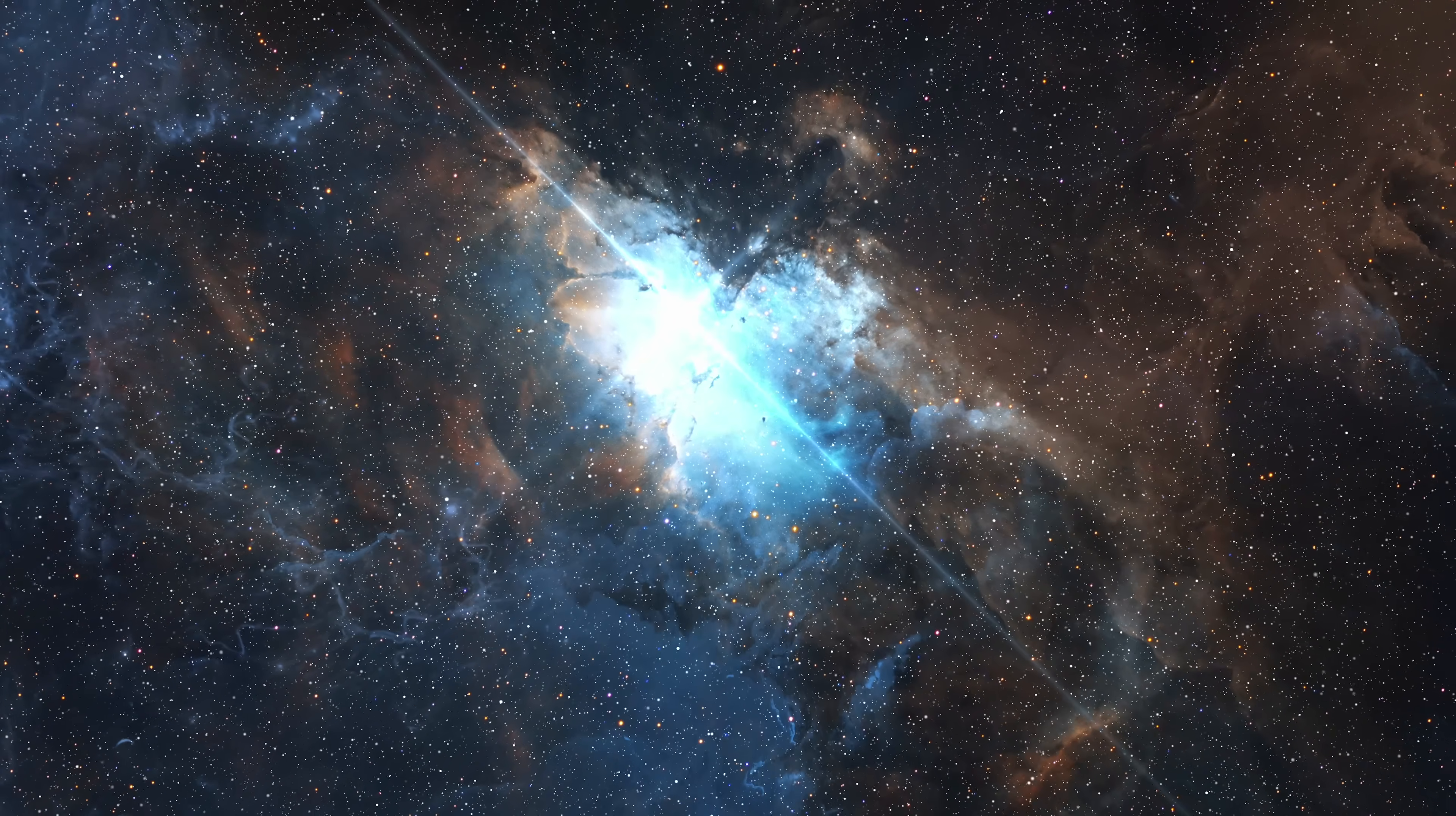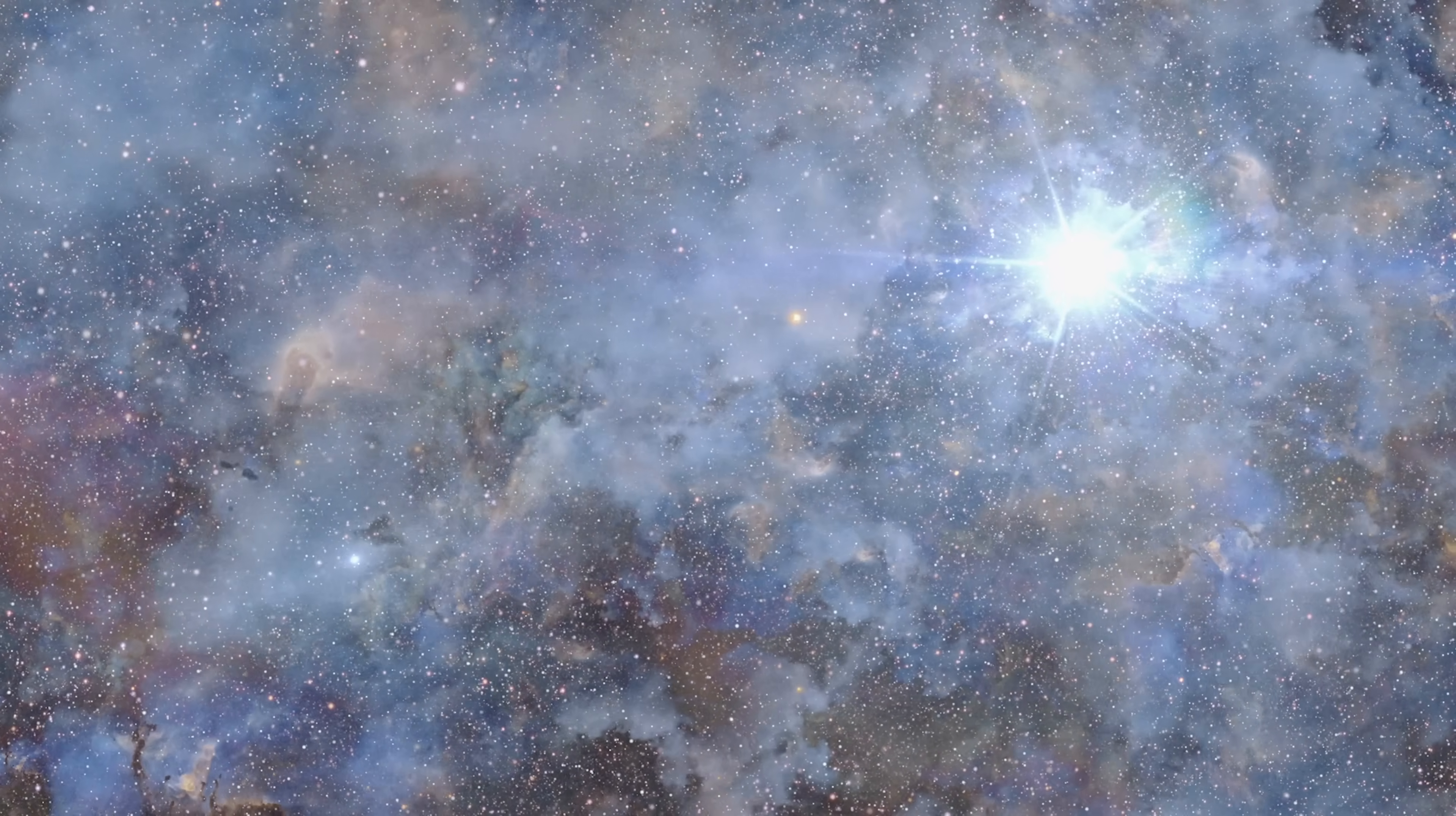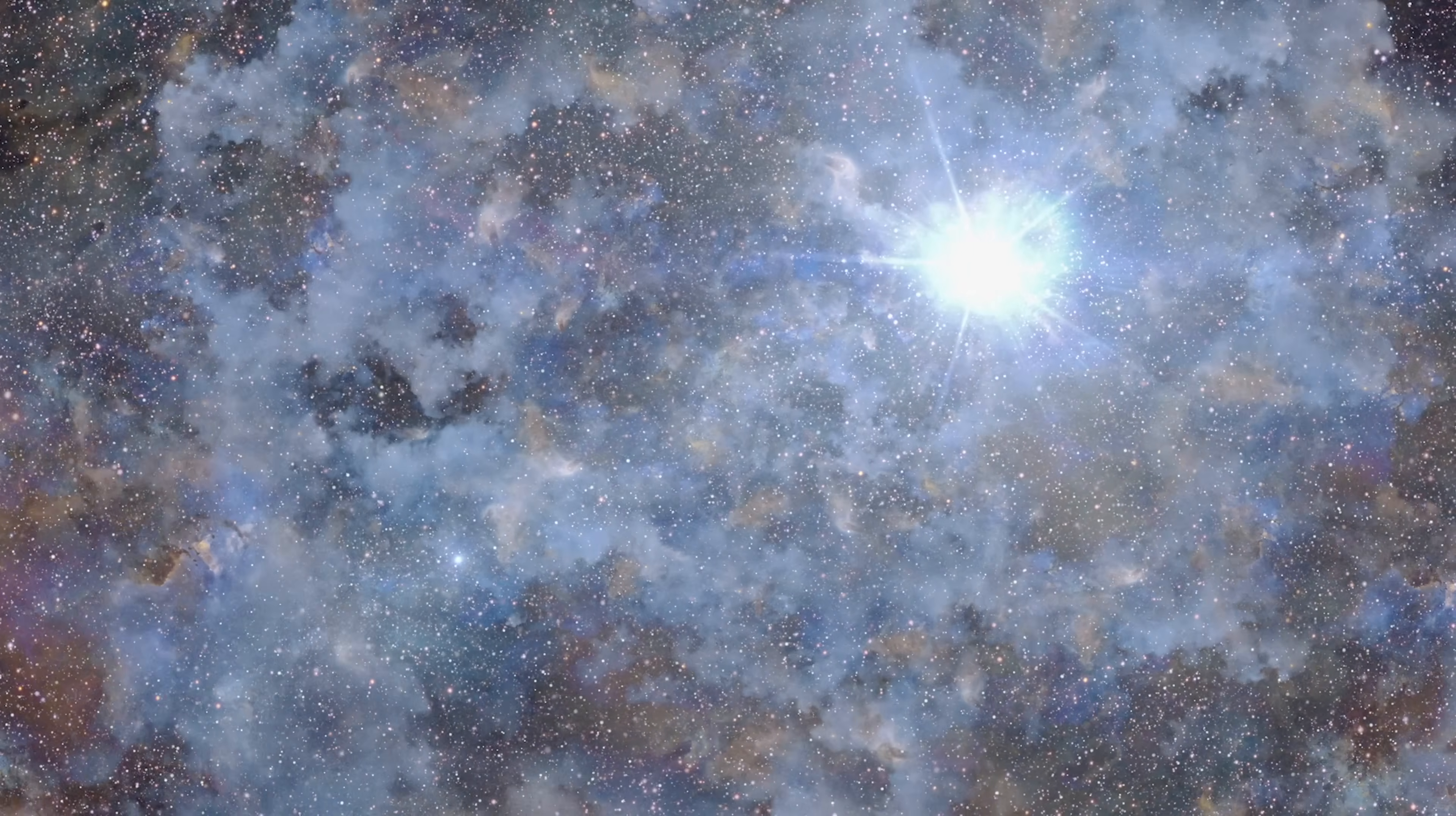When they died in supernova explosions however, they would have produced the first metals for the following population of stars, called Population 2, which have a small proportion of metals. Metals being the term that astronomers use for anything heavier than hydrogen or helium. These Population 2 stars then went on to birth the metal-rich Population 1 stars we see today.